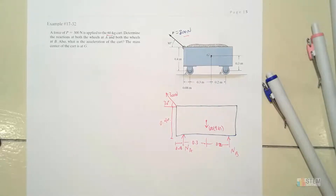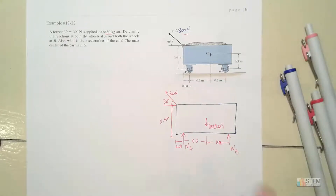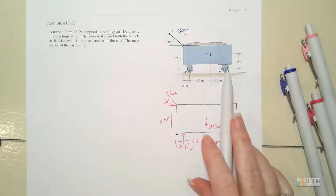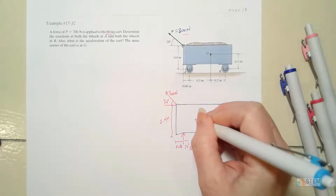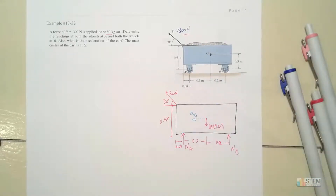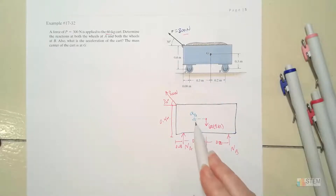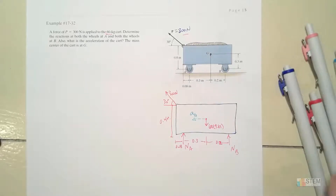The next thing I always put on these diagrams when dealing with kinetics of rigid bodies is the accelerations — you'll see why in just a minute. Since this is pulling to the left, the acceleration is just going to be something going to the left. So let's call this A_G, the acceleration of the center of the cart at G. This is not a force — that's why I use the dashed line and a different color, so it's obvious it's not a force.